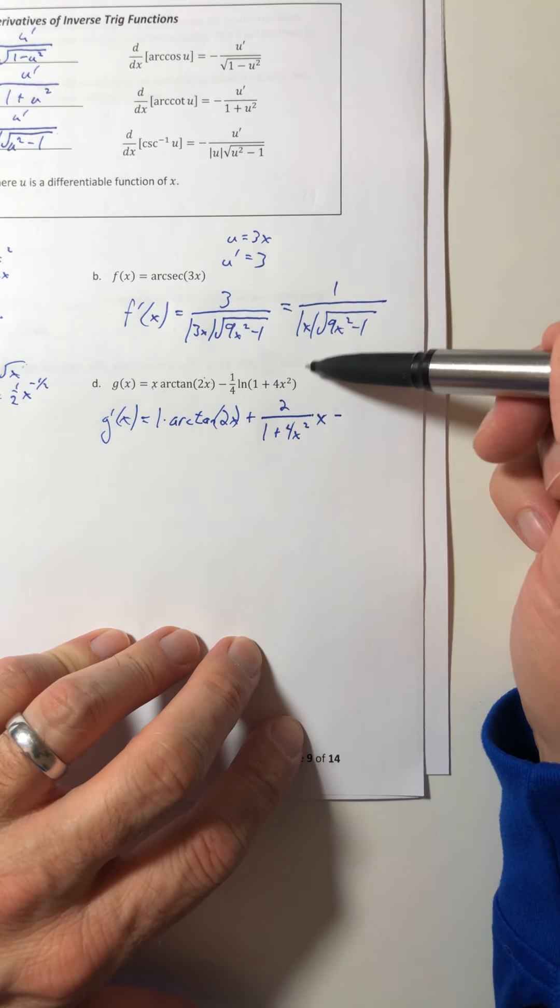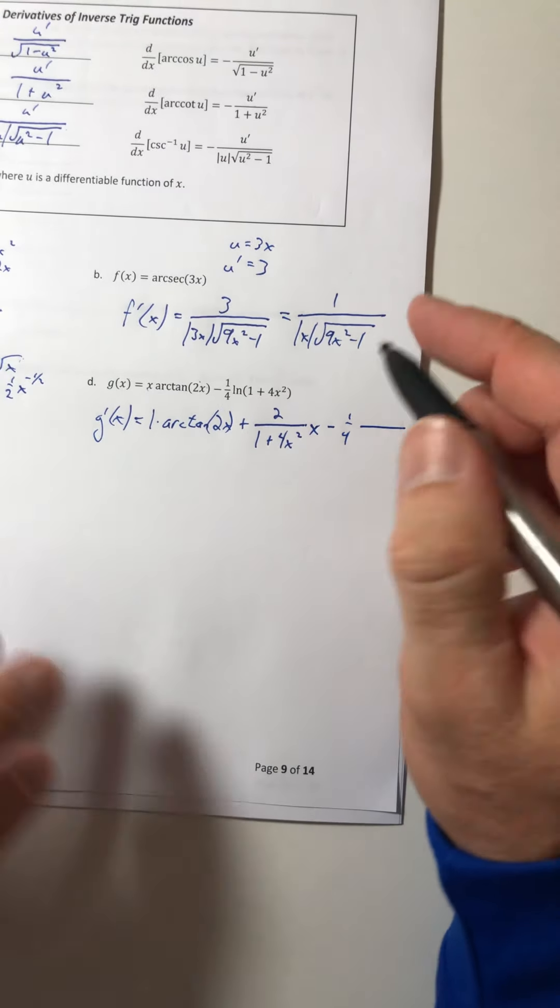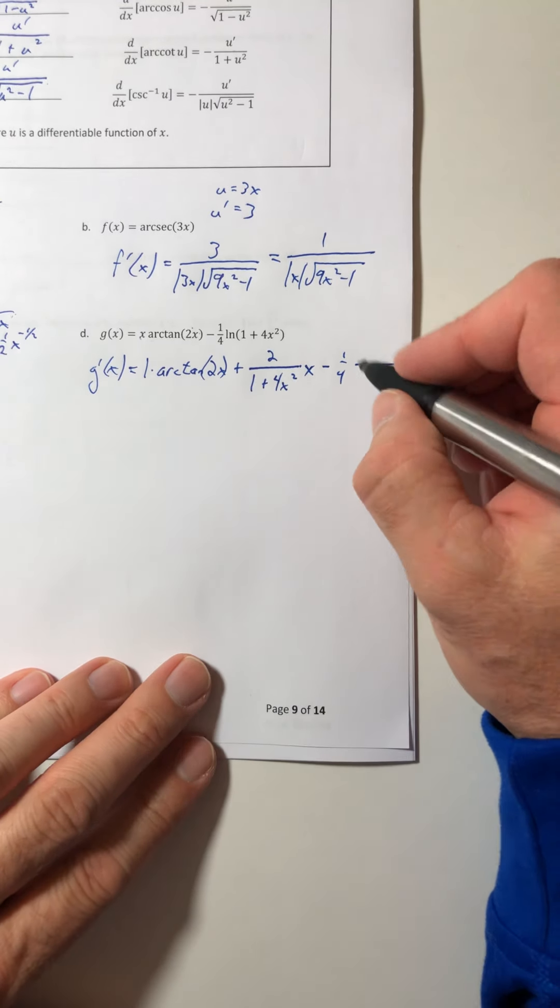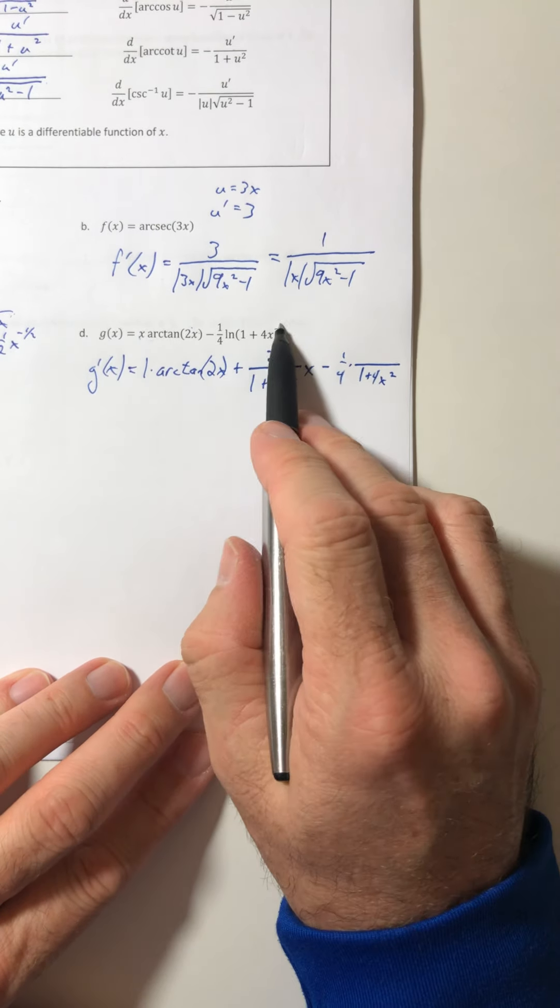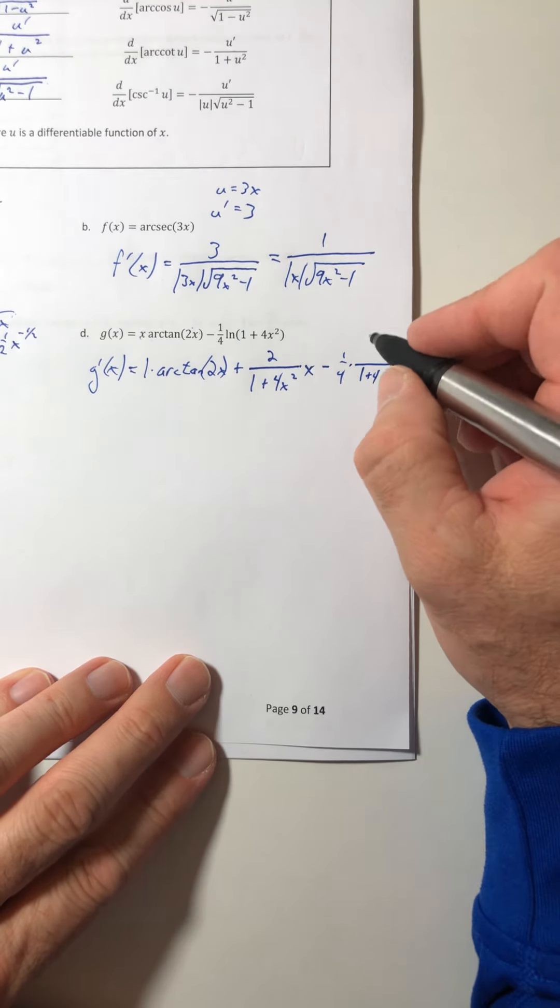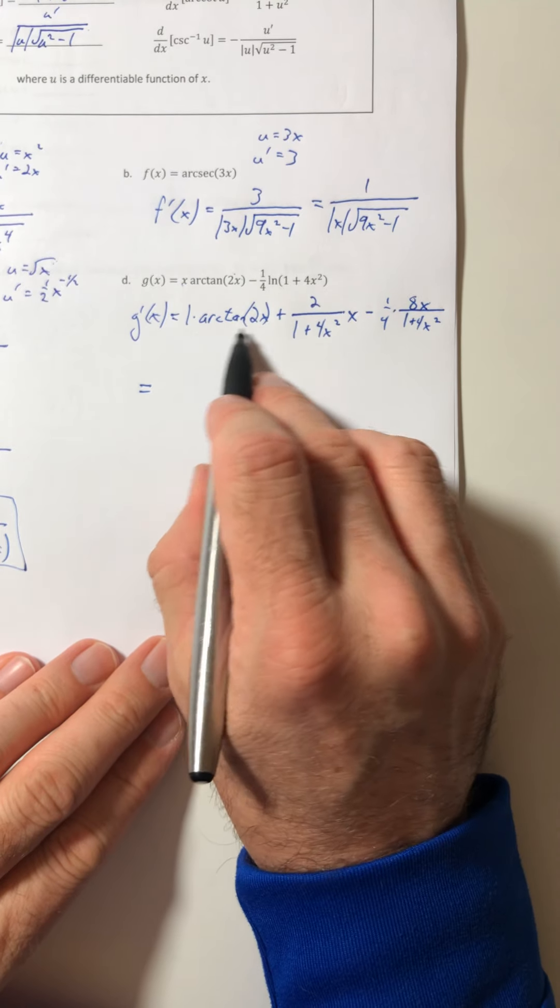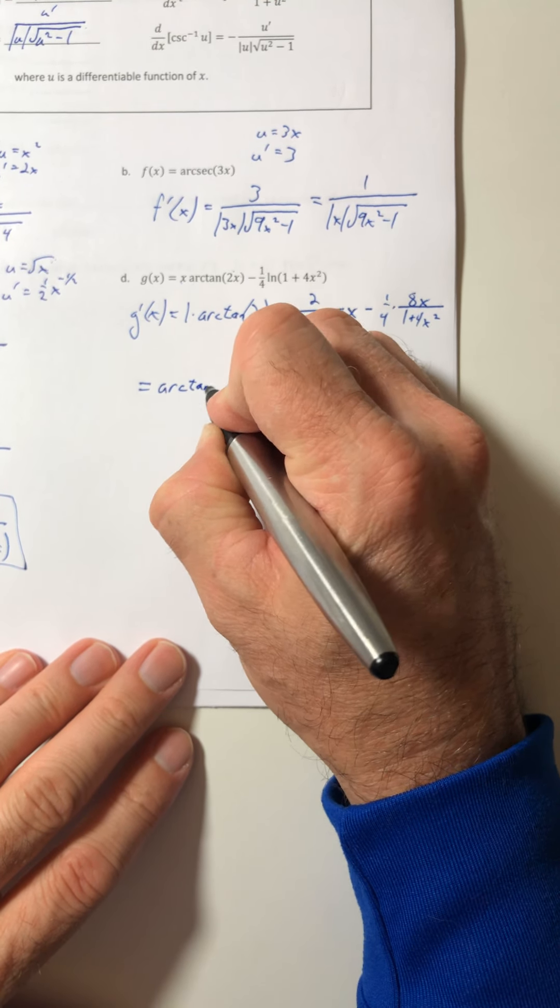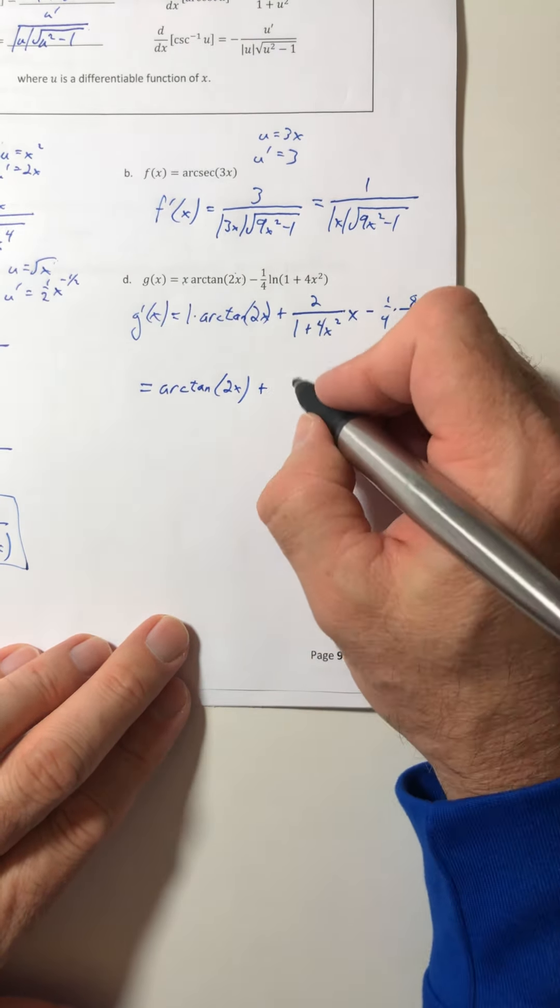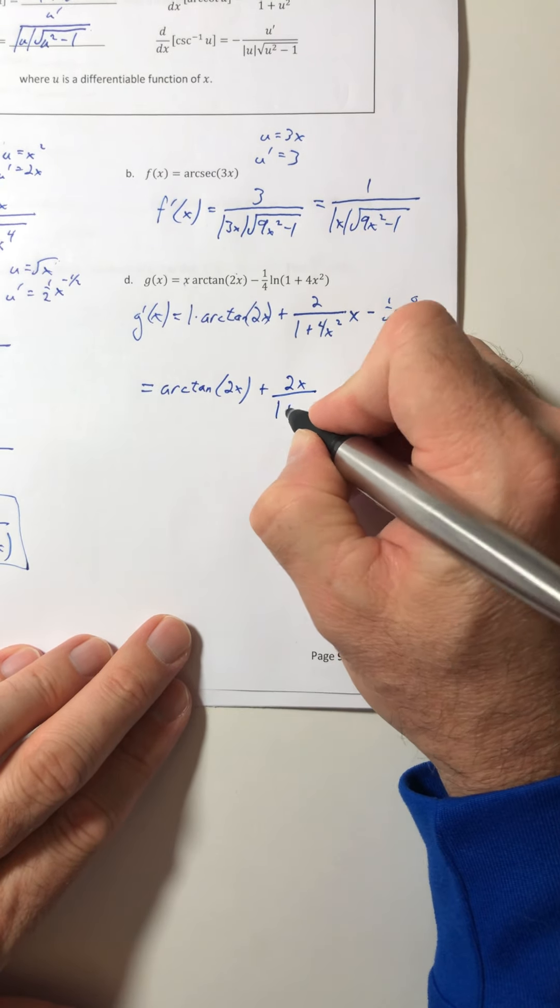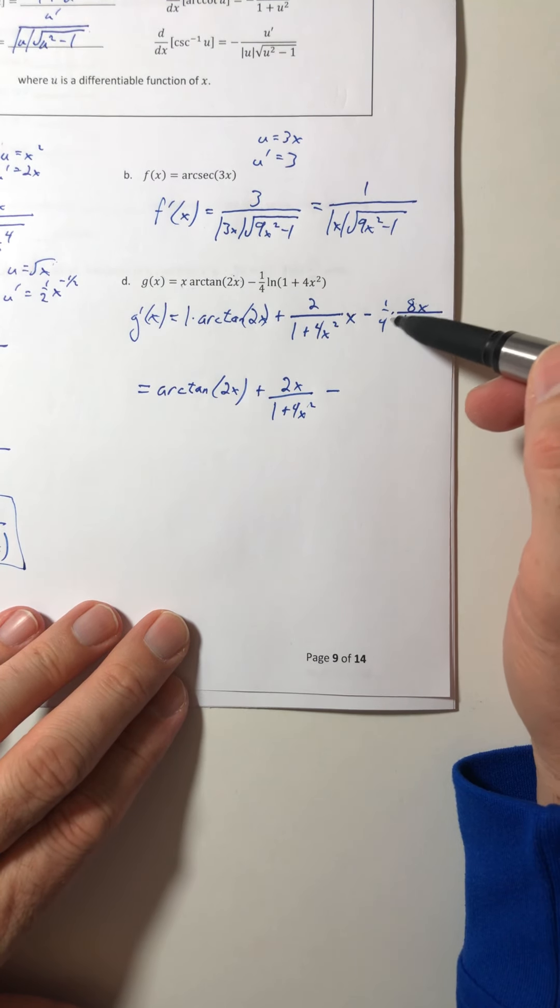And then we have to multiply by that first term, which was x. And minus. Now I can attack the logarithm. So 1 over 4. And then for the logs, remember whatever's inside the logarithm, that goes in the denominator. And then the derivative of what's in the log goes on top. So that would be an 8x. Okay, so let's simplify this down. That's just arctangent of 2x. Plus this x just gets multiplied to the 2.